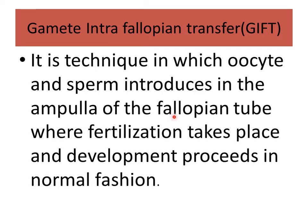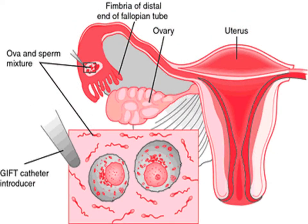The first one is Gamete Intrafallopian Transfer (GIFT). It is a technique in which oocyte and sperm are introduced into the ampulla of the fallopian tube, where fertilization takes place and development proceeds normally. Here you can see the ovum and sperm mixture is introduced into the ampulla — this is the broad part of the fallopian tube known as the ampulla.